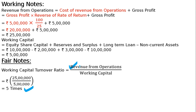The turnover ratio is expressed in times, so Working Capital Turnover Ratio is 5 times. This means our Current Assets minus Current Liabilities, that is Working Capital, has generated sales 5 times — meaning sales is 5 times the working capital invested in the business. If you found this helpful, please like, share, and subscribe. Thank you.